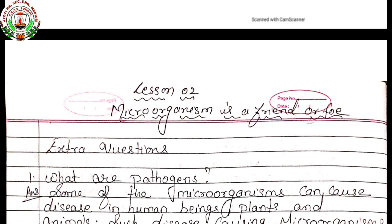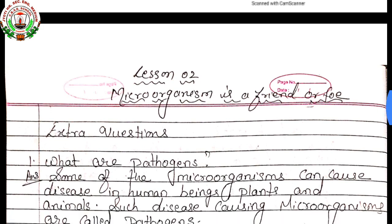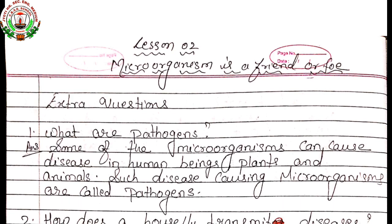Now we will proceed to the extra question and answer section. First question: What are pathogens? Some of the microorganisms can cause diseases in human beings, plants, and animals. Such disease-causing microorganisms are called pathogens.